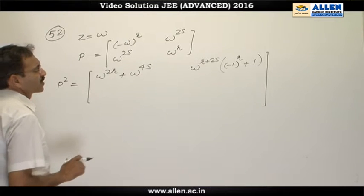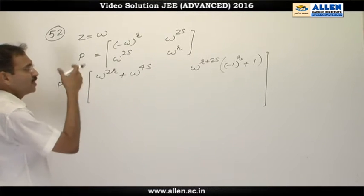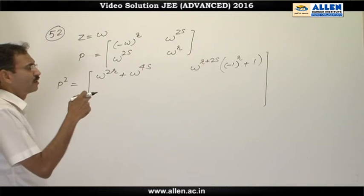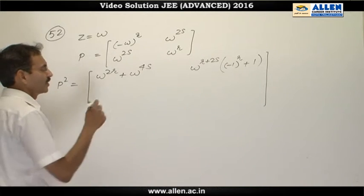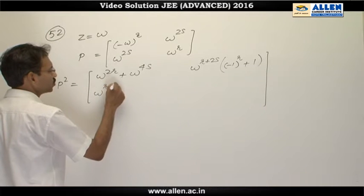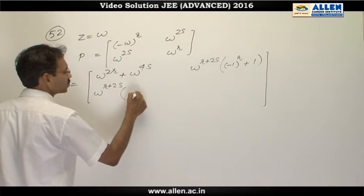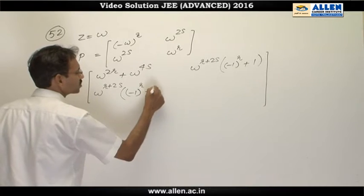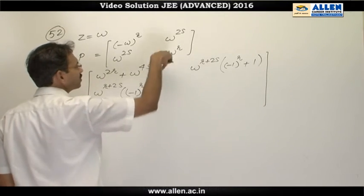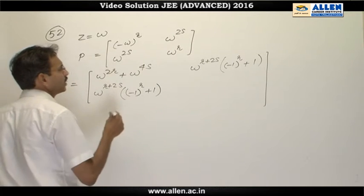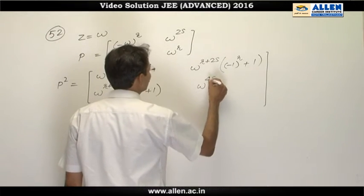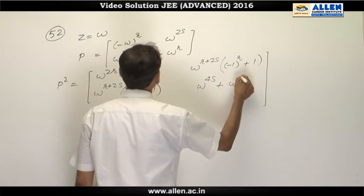The same element will appear in the symmetric position because P is symmetric, and the square of a symmetric matrix is also symmetric. Therefore here it is omega raised to the power r plus 2s times minus 1 raised to the power r plus 1. Then the last element — second row, second column — is omega raised to the power 4s plus omega raised to the power 2r.